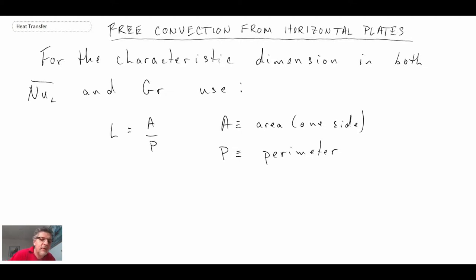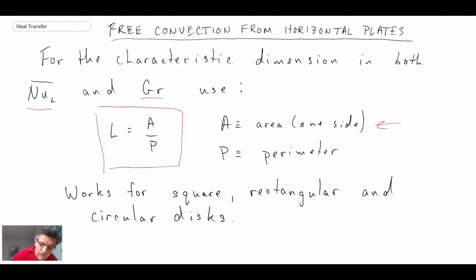This is an equation that we can use in determining the length scale for our non-dimensional numbers—that would be in the Nusselt number as well as in the Grashof number. The area would be for one side of whatever shape we're looking at divided by the perimeter, and this works for square, rectangular, and circular disks. That is the characteristic length scale we can use in the correlations.